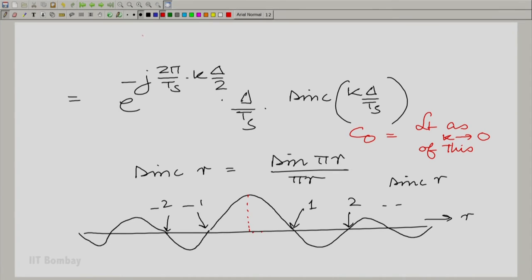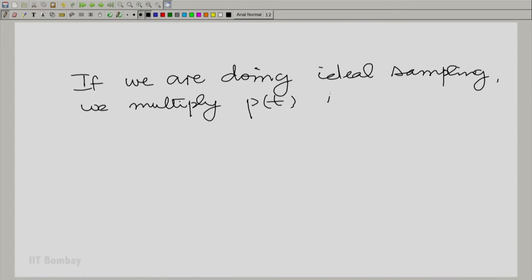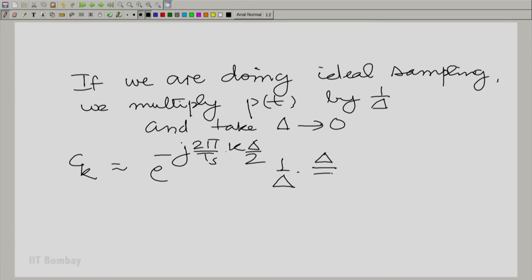Let me zoom it and explain to you what I am trying to say. If we are doing ideal sampling, we multiply p(t) by 1/delta and take delta tending to 0. So c_k then becomes e raised to the power all that business. And since delta tends to 0, this anyway goes to 1. And then you have 1/delta multiplying delta/t_s. So as delta tends to 0, c_k all of them become essentially equal to 1/t_s, all the same.